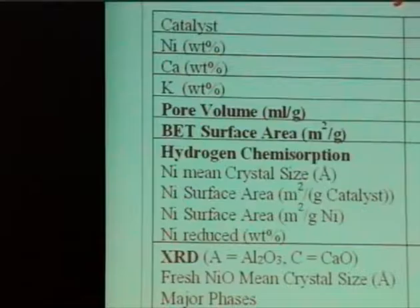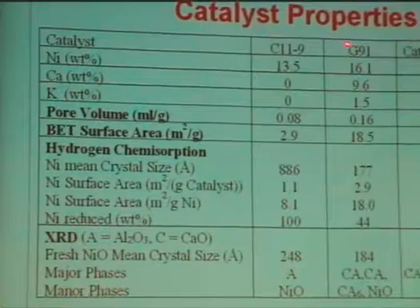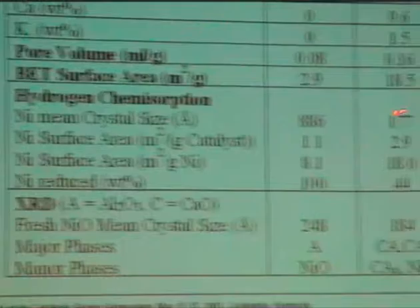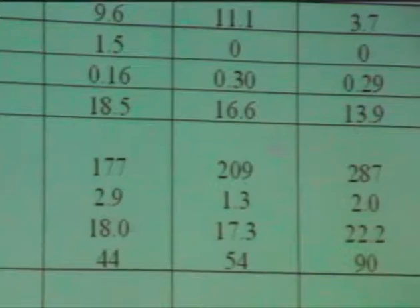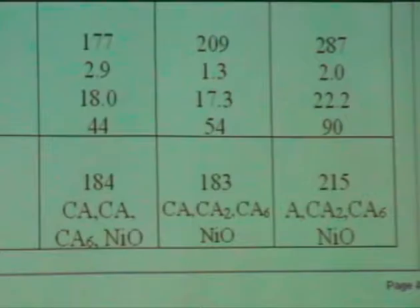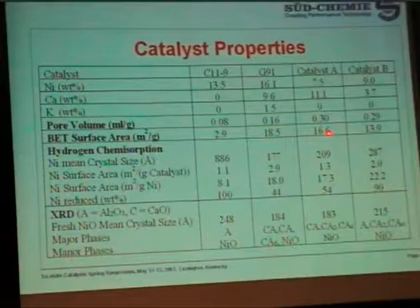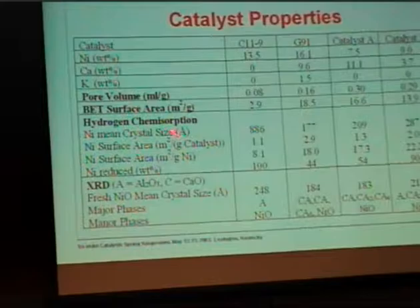We have the alpha-alumina catalyst, a calcium aluminate catalyst, and two other calcium aluminate catalysts with different calcium levels. The pore volume for the alumina-based catalyst is pretty low — less than 0.6 cc per gram. With calcium aluminate, you can double or even triple it. The surface area is also pretty low at about 3 square meters per gram for alumina, and you get about 5 to 6 times higher for the calcium aluminate catalysts. Nickel dispersion measured by hydrogen chemisorption shows that after reduction, the alumina-based catalyst has pretty large nickel crystals, while the calcium aluminate type has relatively smaller ones.